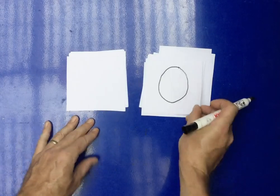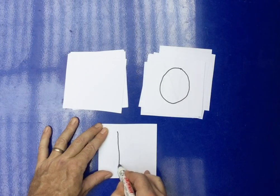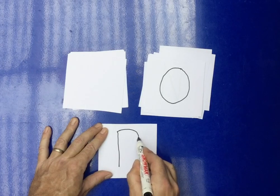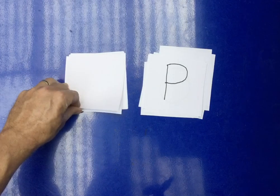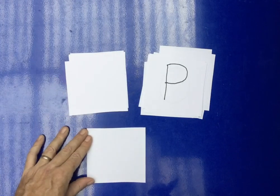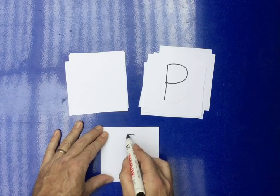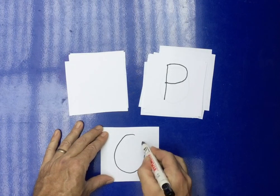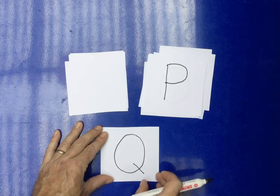After the O, we have the P. All right. After the P, what do we have? L, M, N, O, P, Q. We make a circle just like the O, and we give it a little tail. The Q.